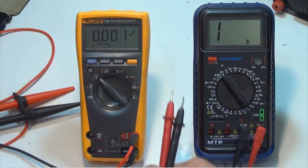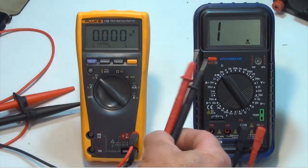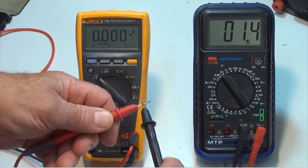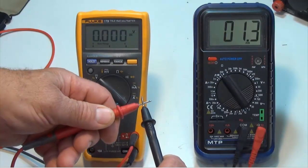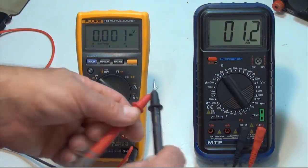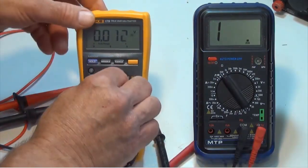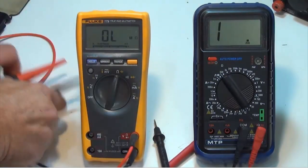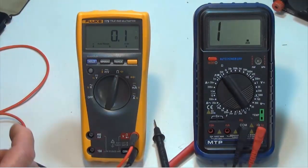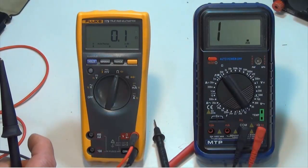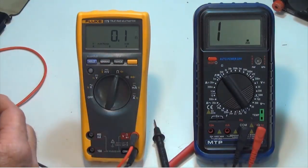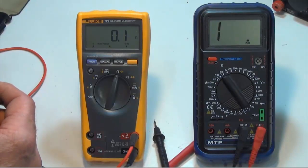So these are the probes for the MTP meter. Let's just check and make sure our probes are working and they are connected to the meter properly. I'm getting about 1.2 ohms, that's good. Let's do the same quickly for the Fluke meter here. I'll just clip the leads together, and you can see I'm getting about 0.1 ohms, so it's telling me my meter leads are good and connected properly.